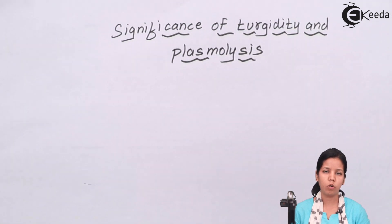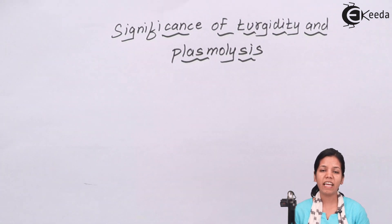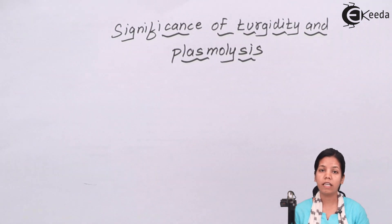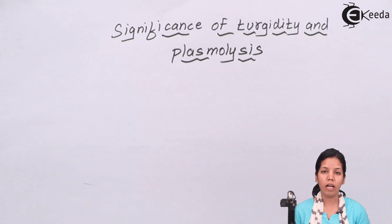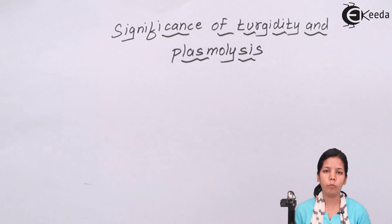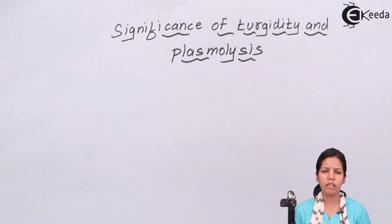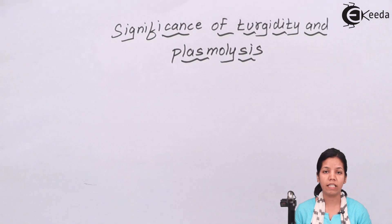The significance of plasmolysis is that it can demonstrate whether a cell wall is semi-permeable or impermeable. Obviously, if a cell wall is semi-permeable, then only it will allow the passage or movement of material. Another significance is that plasmolysis helps to detect whether a cell is living or dead, since plasmolysis can only take place in a living cell and not in one that is already dead.